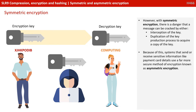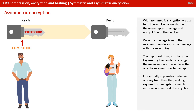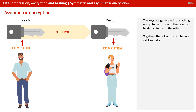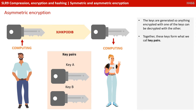With asymmetric encryption, we use two different keys. We start with the unencrypted message and encrypt it with the first key. Once the message is sent, the recipient then decrypts the message with a second key. The important thing to note is the key used by the sender to encrypt the message is not the same as the one the recipient uses to decrypt it. It's also virtually impossible to derive one key from the other, making asymmetric encryption a much more secure method. The keys are generated so anything encrypted with one of the keys can be decrypted with the other, and together these keys form what we call key pairs.